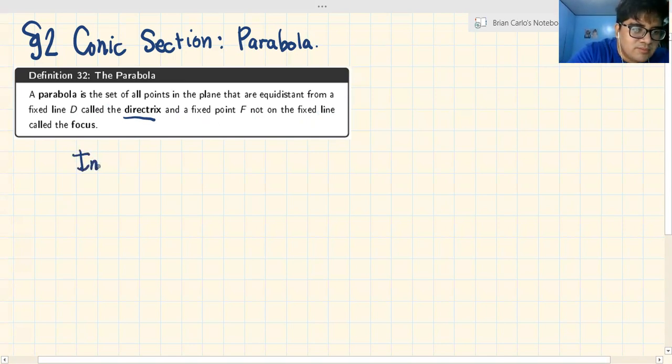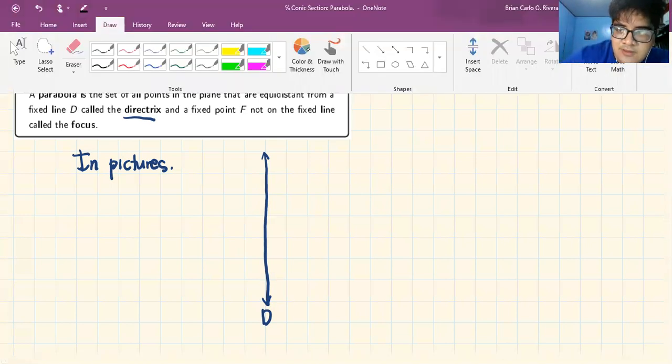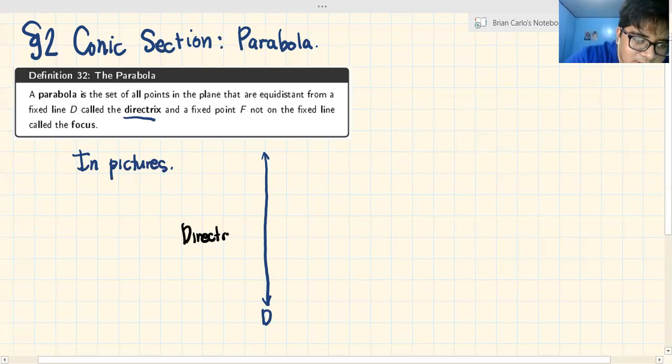In pictures, what does that mean? Let's say we have this line. We have a fixed line, the directrix. This is called the directrix. This is the fixed line.